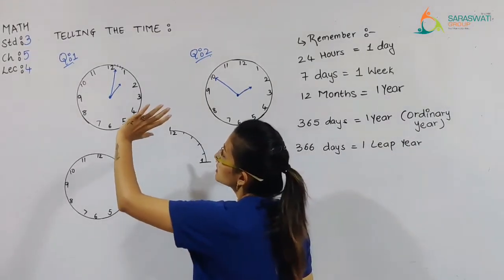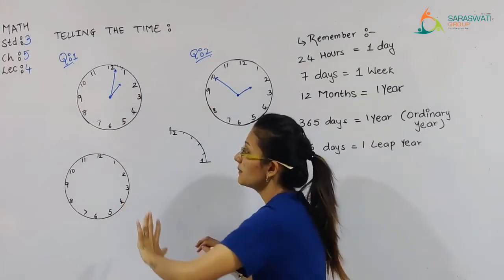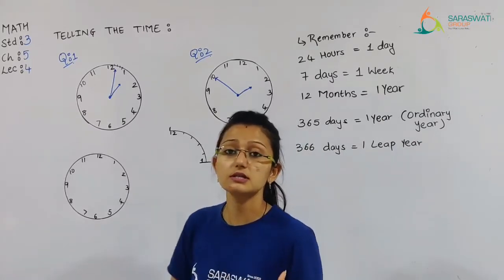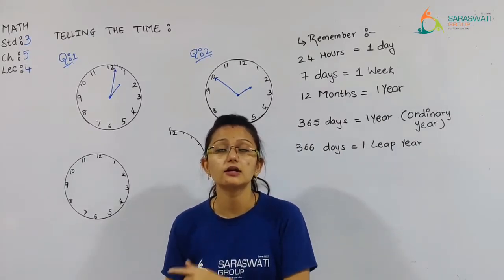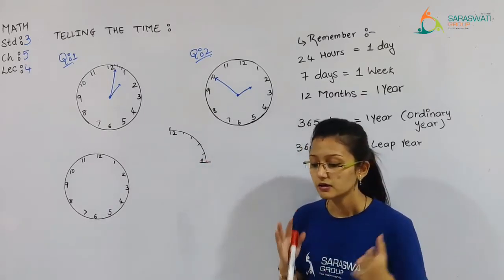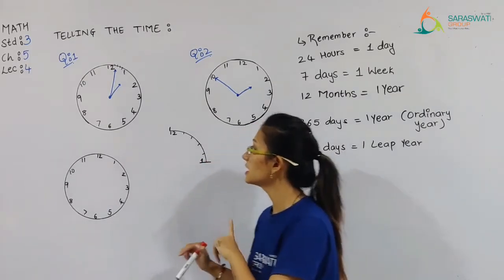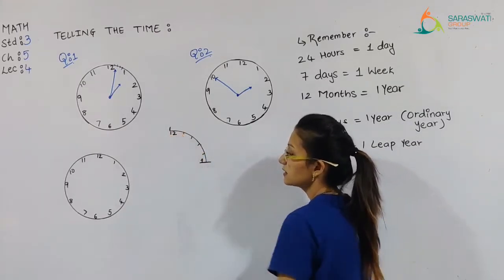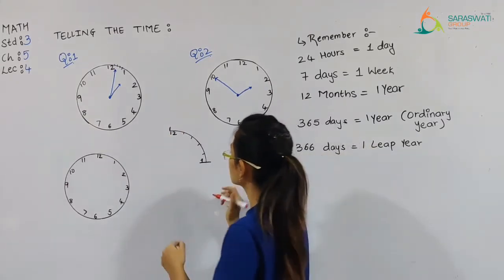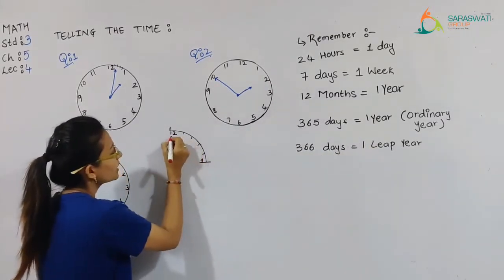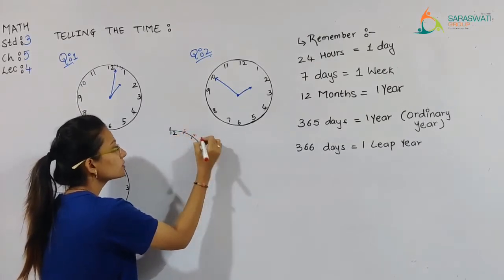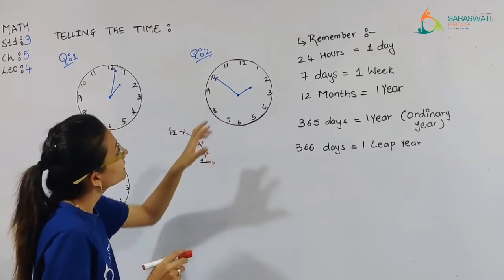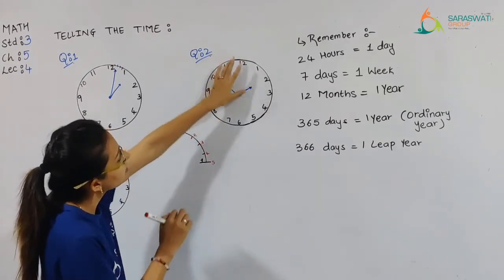So over here, I'm going to give you something. There are question number 1 and question number 2, which are from your exercise 5.3. In exercise 5.3, telling time to the 1 minute — 1 minute means what? From 12 to 1, it is 1 minute. You have already learned this last time. 12, then 1, 2, 3, 4 and 5.